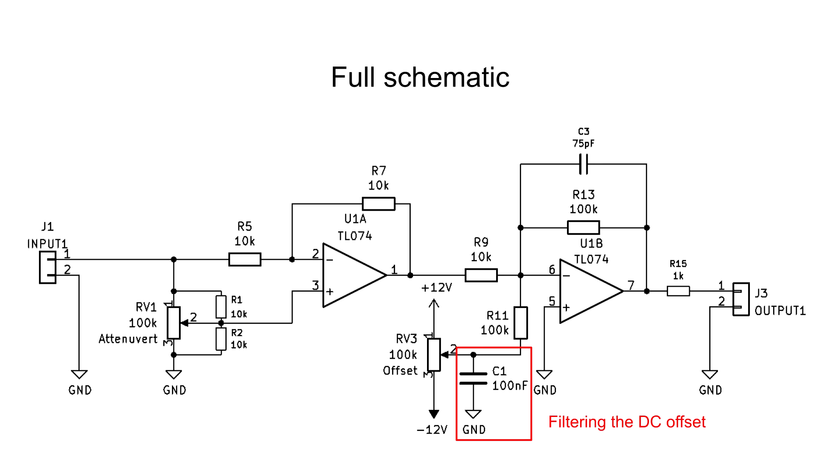Because the offset potentiometer is connected to the power rails, it is important to filter this offset voltage from possible noise on the rails. This is done with capacitor C1.